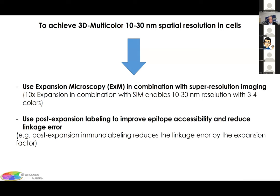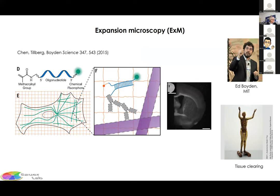We thought about whether we can achieve higher resolution in 3D multicolor mode by using expansion microscopy in combination with super-resolution microscopy. Intuitively, a tenfold expansion combined with structured illumination microscopy should allow access to 10–30 nm spatial resolution in 3D with different colors. Structured illumination microscopy is not very demanding concerning which fluorophores can be used. The other question is how to reduce linkage error — one possibility is to label proteins after they have been expanded, which I will discuss in the next ten minutes.